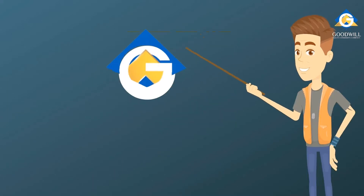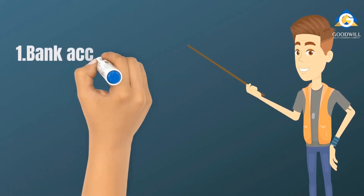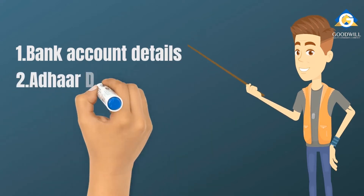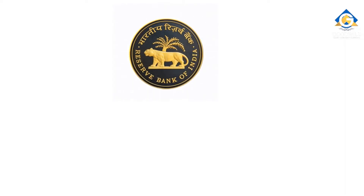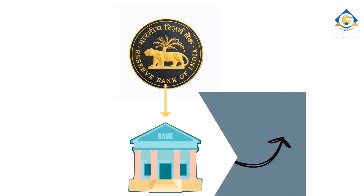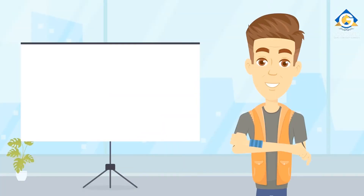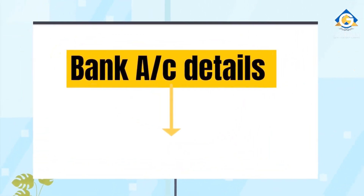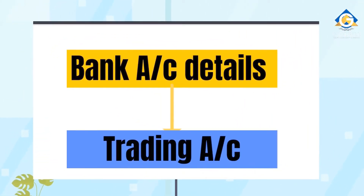Rahul has now decided to open a trading account with Goodwill, and for that he needs to provide his bank account details along with Aadhaar, TAN, and income details. Rahul should remember that the Reserve Bank of India regulates the bank and that the bank is also a market intermediary. The bank account details provided by Rahul while opening the trading account are linked to his trading account.